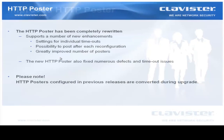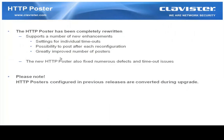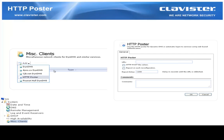Improved HTTP Poster. The HTTP Poster has been completely rewritten. It supports a number of new enhancements such as settings for individual timeouts, the possibility to post after each reconfiguration, and a greatly improved number of posters. The new HTTP Poster also fixed numerous defects and timeout issues. Please note that if you are already using HTTP Posters in a previous release, they will be converted during upgrade. To add an HTTP Poster you go to the System menu, Miscellaneous Clients, and add either one of the predefined or the more general HTTP Poster, where you can type in the URL, HTTP Poster values, repost on each reconfiguration, and the repost delay.